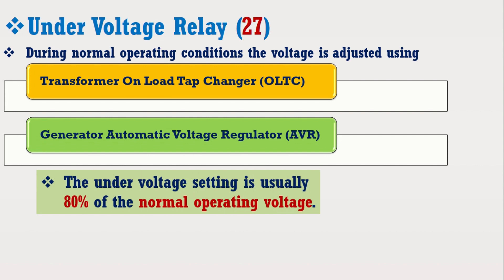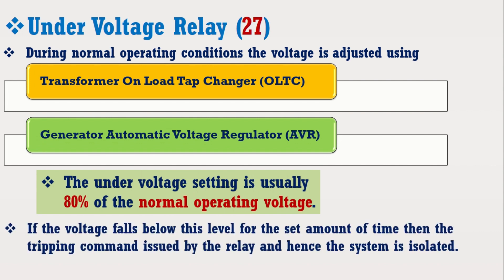The undervoltage setting is usually 80% of the normal operating voltage. If the voltage falls below this level for the set amount of time, then the tripping command is issued by the relay and the system is isolated. Let's discuss its designing in MATLAB Simulink software.